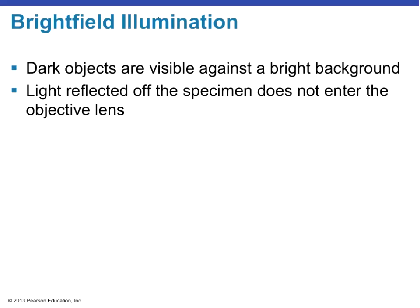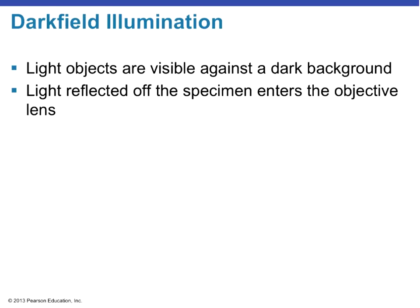Bright field illumination is where dark objects are seen against a bright background — that's what we used when we stained our specimens and cheek cells. The light is reflected off the specimen and does not enter the objective lens. The opposite is dark field illumination, where lighter objects are visible against a dark background. For example, in a capsule stain for Klebsiella, light objects will be visible against a dark background stained with ink.